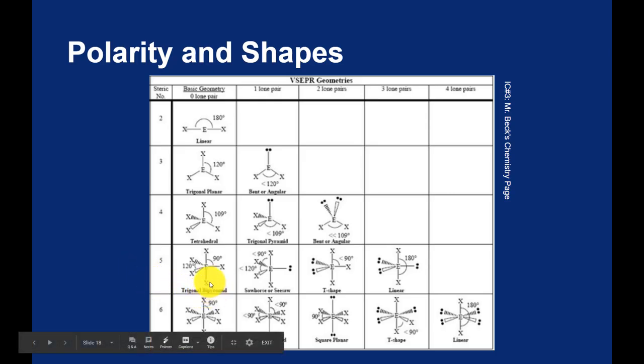We can go to the seesaw shape with one lone pair, and that's polar. It's asymmetric. You can go T-shaped with two lone pairs on the central atom, and that's still polar.